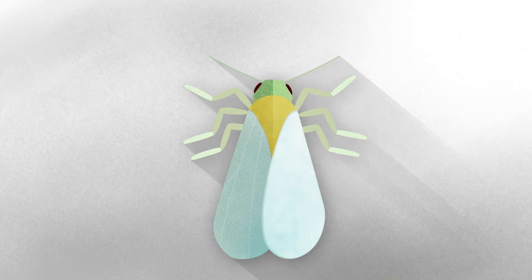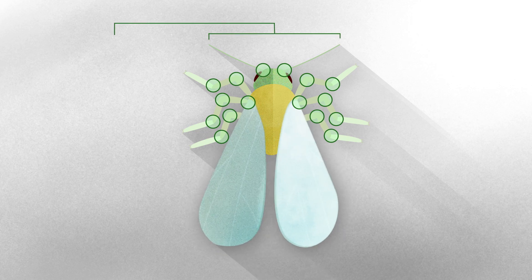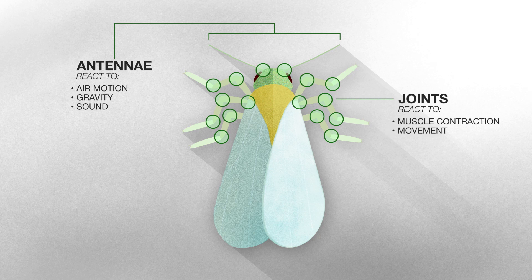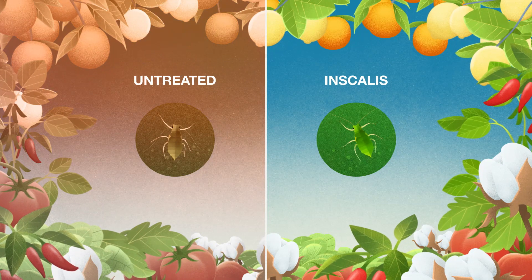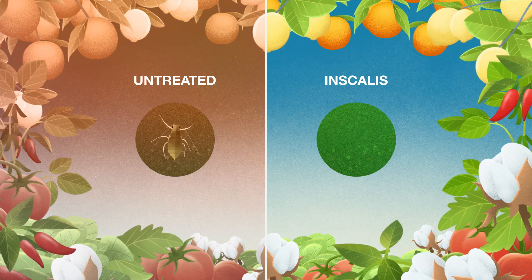This unique mode of action is a chordotonal organ TRPV channel modulator. Chordotonal organs provide insects with their senses of hearing, orientation, and balance. Once active, insects become disoriented, dehydrate, and starve, resulting in exceptional control.